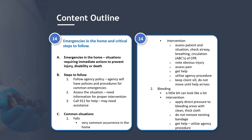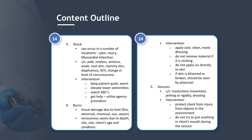Bleeding — a little bit can look like a lot. Intervention: apply direct pressure to the bleeding area with a clean, thick cloth; do not remove any existing bandages; get help and utilize agency procedures. Shock can occur in situations such as pain, injury, or myocardial infarction. Signs and symptoms include restlessness, anxiety, weakness, cool and clammy skin, diaphoresis, and a change in level of consciousness. Intervention: keep the patient quiet and warm, elevate lower extremities, watch ABCs, and get help following agency procedures.